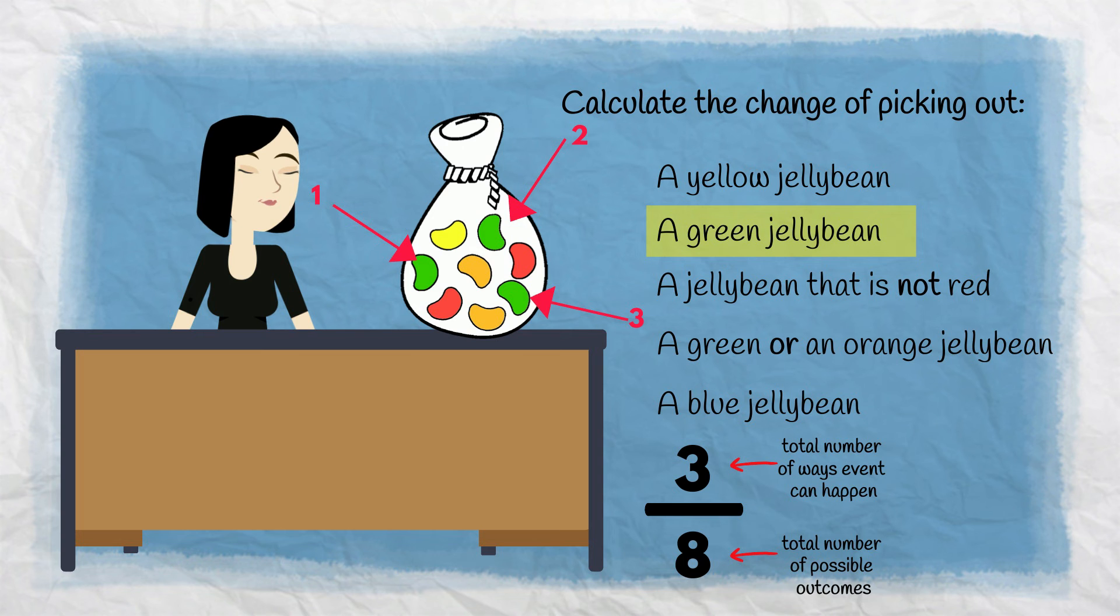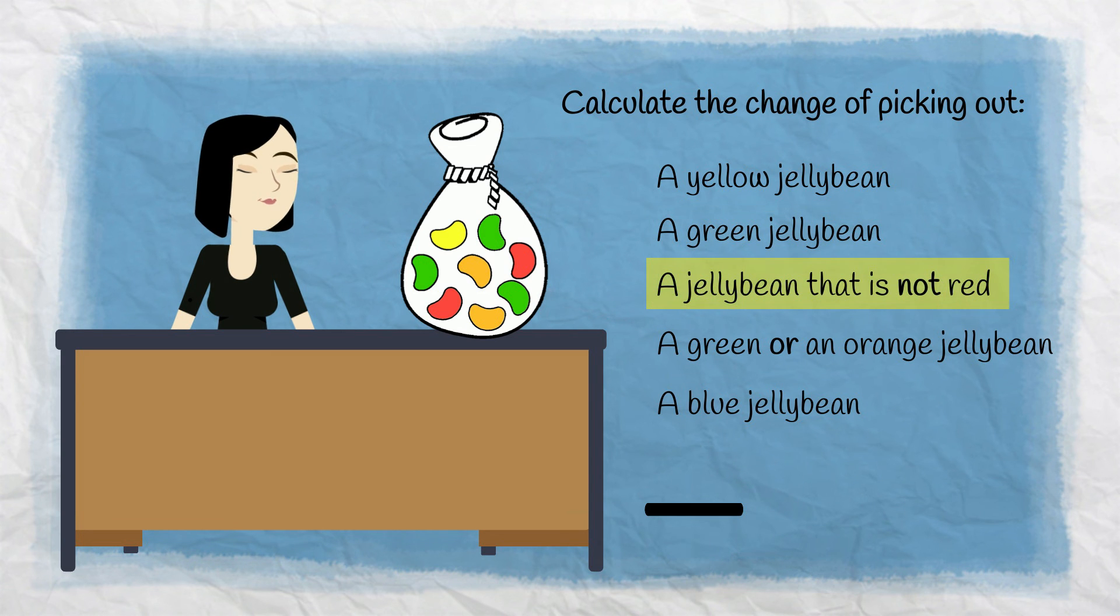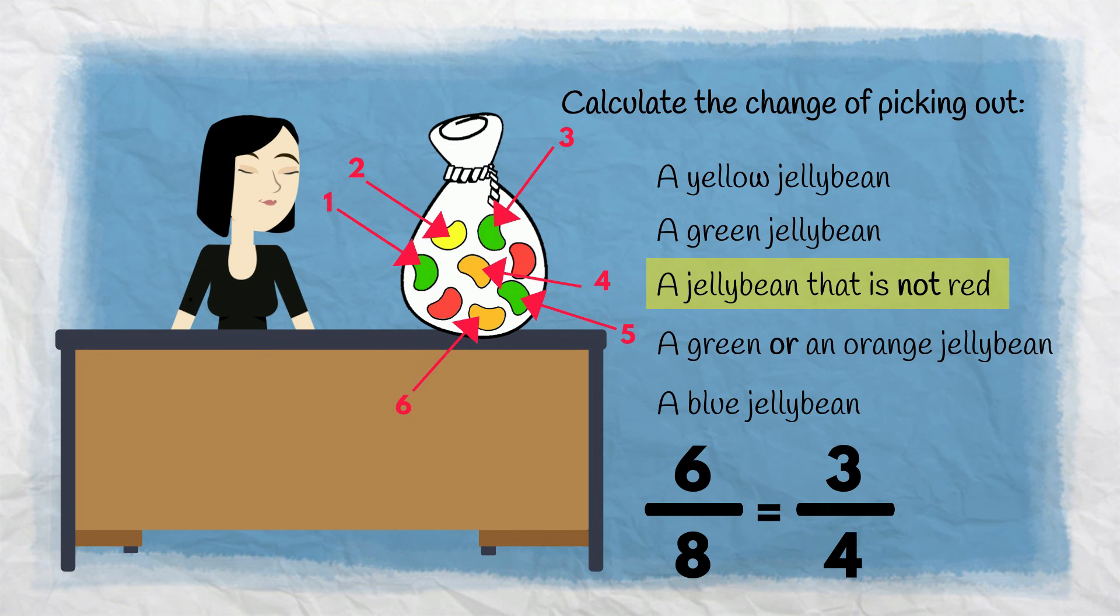The chance of picking a jelly bean that's not red is 6 in 8. There are still 8 possible events, and here are the six ways the event could happen. 6 in 8 can be simplified to 3 over 4. As a decimal, that is 0.75.